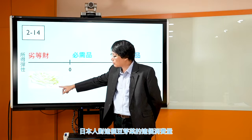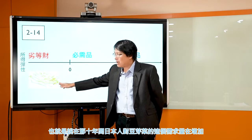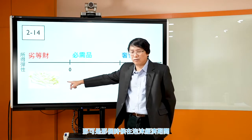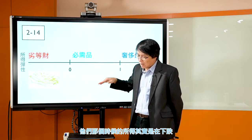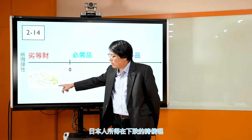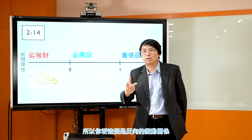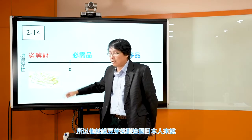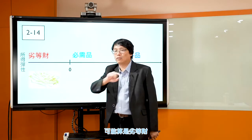比如像豆芽菜。根据一个研究，在日本泡沫经济时期（2000年到2010年之间），日本人对豆芽菜的需求量在增加。而那时候日本人的所得其实在下跌，所得下跌时豆芽菜需求量增加，是反向的变动关系，所以豆芽菜对日本人来说可能算是劣等财。